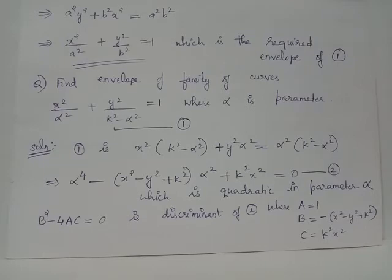we have the desired envelope as the discriminant of equation 2, given by b² - 4ac = 0, where b is the function minus of (x² - y² + k²). a is the function here —